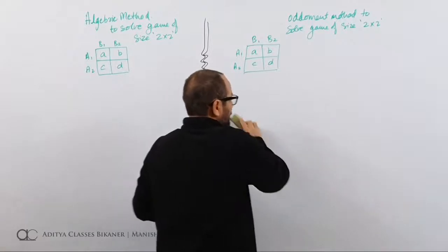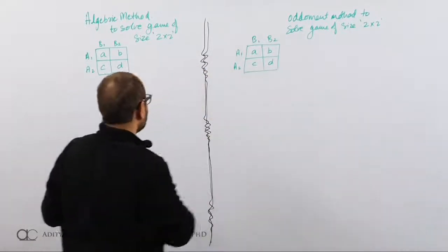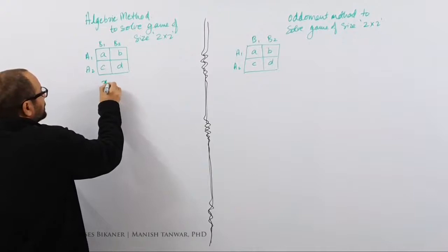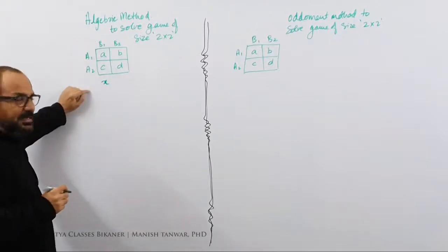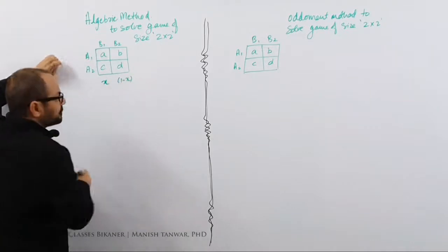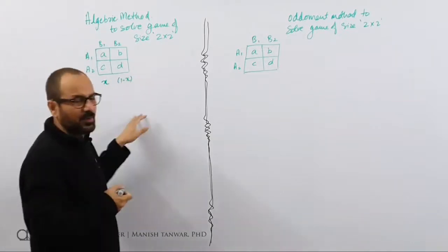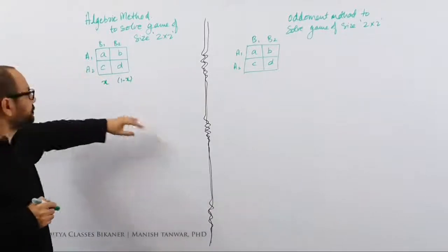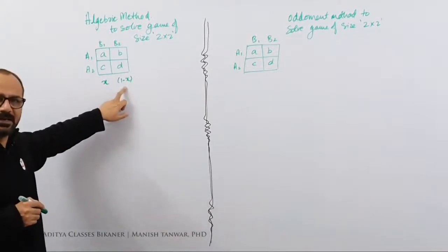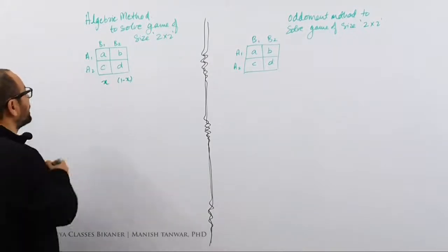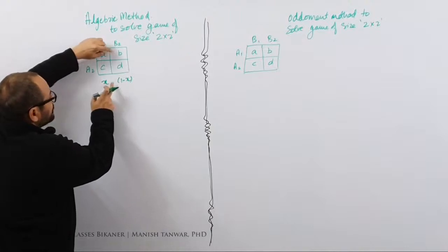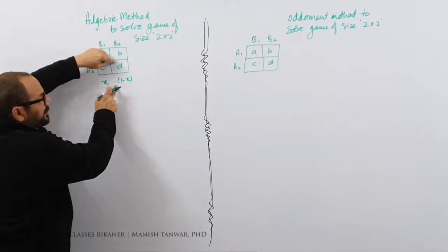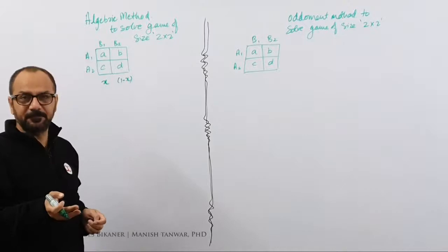Yes, as far as formula is concerned, let us see how algebraic works and how oddment works. What happens in algebraic method? In algebraic method, we assume that let us say this is probability of B1 is X. Then probability of B2 would be 1 minus X. Obviously, probability of all odds is 1. In this case also, it was 11 by 14 and 3 by 14. 11 by 14 plus 3 by 14 was 1. So probability is always 1. So if this is X, this is bound to be 1 minus X.